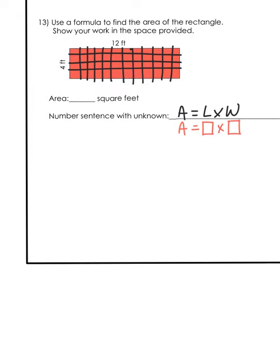So, you're going to multiply those two numbers, 12 and 4, to get your area. And that is your approach.